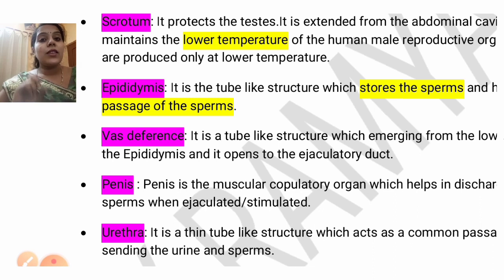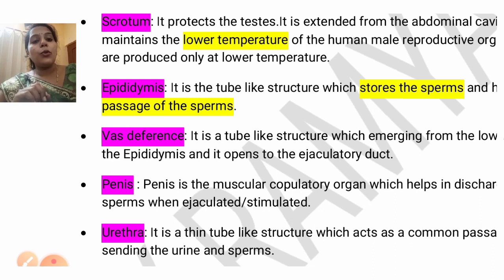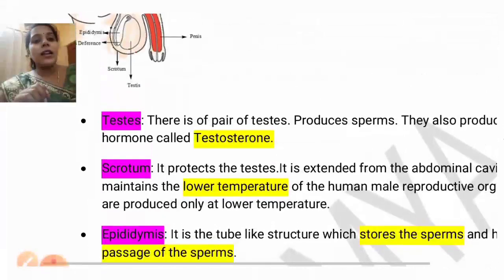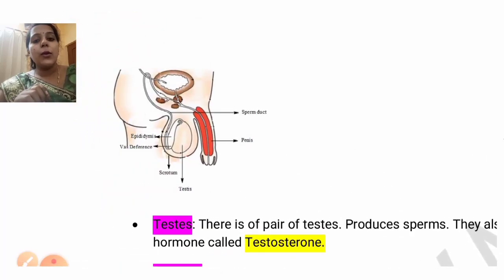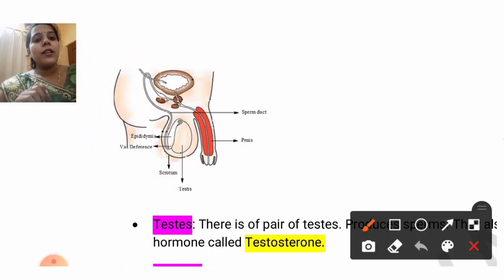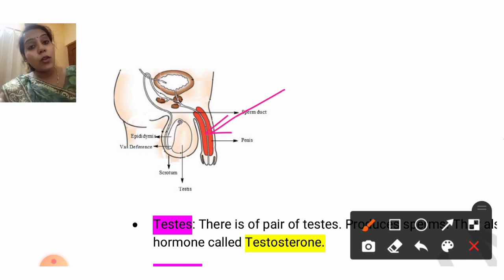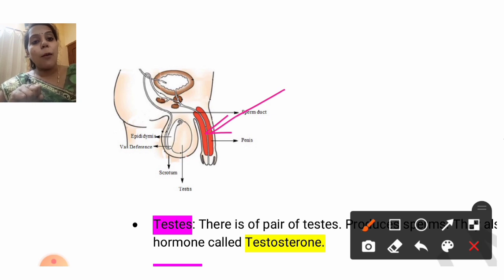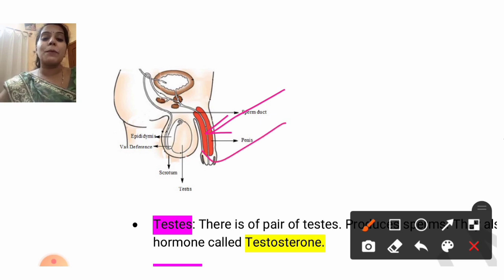Next is the urethra. The urethra is a common passage. This urethra is present inside the penis and will help in passing both the sperm as well as the urine. It is a common passage for both urine and sperms.